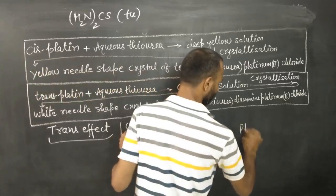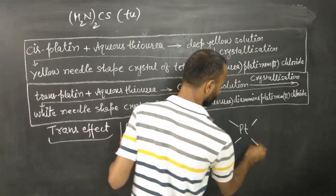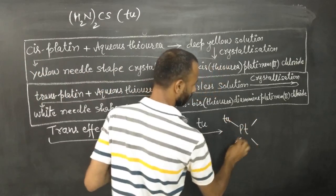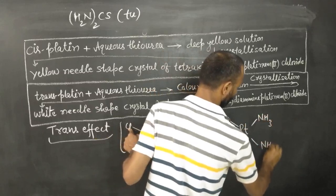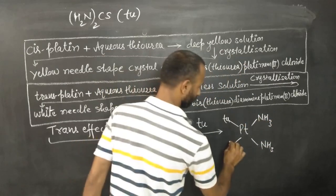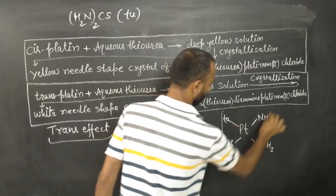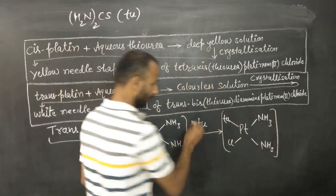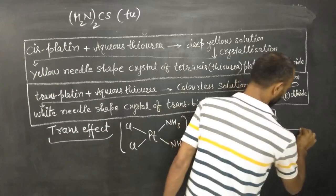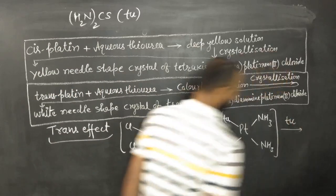Then we get Pt-TU and NH3 and NH3 and Cl. Once this one thiourea is removed, we add another thiourea.